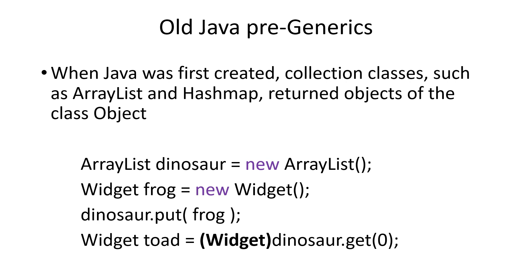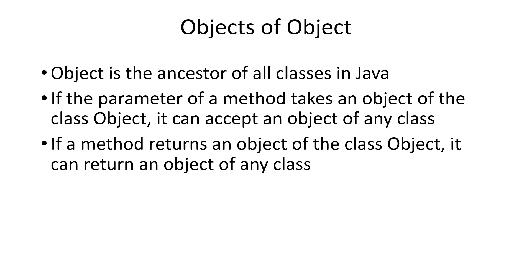Frog is a Widget. We can put Frog into the ArrayList Dinosaur, and then later when we get the object from the ArrayList, we must cast it to the type Widget, because Java doesn't know what type of object was in that ArrayList. Remember, Object is the ancestor of all classes in Java. Even if you don't specify that you're extending a class, you are always extending the class Object. So if a method takes a parameter of type Object, it can accept any sort of object, and if a method returns type Object, it can return any sort of object.